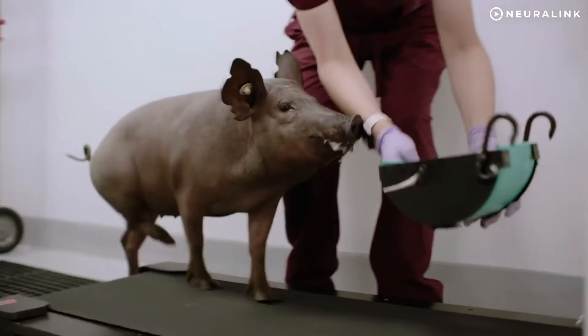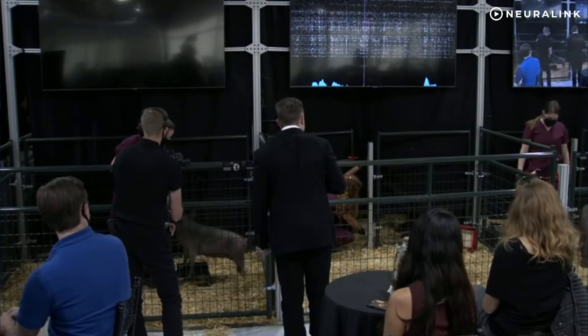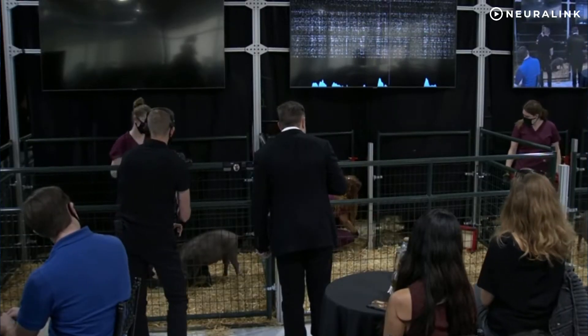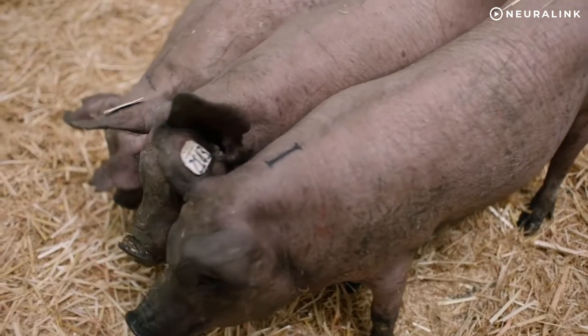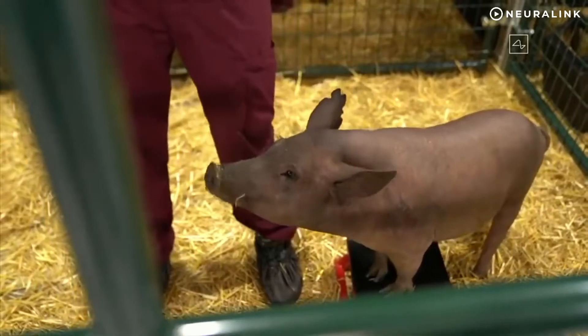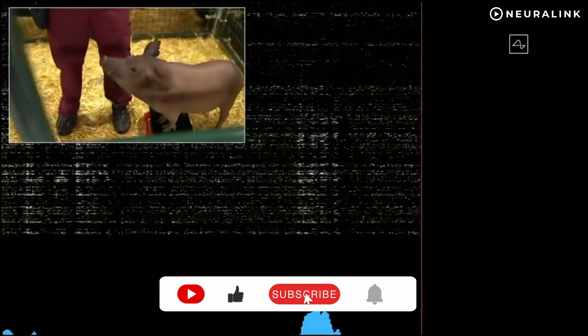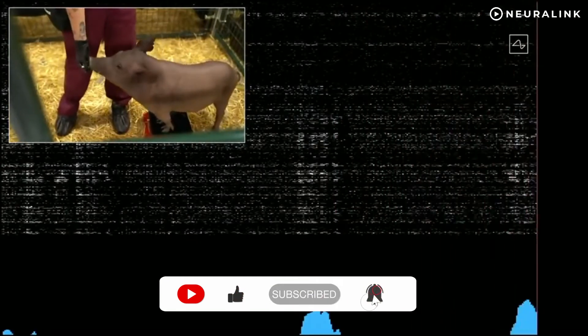Neuralink unveiled a pig called Gertrude with a thin gold computer chip in her brain to demonstrate his plans to create a working brain-to-machine interface. Gertrude was one of the three company's pigs that took part in the research video. She took a while getting going with the experiment, but when she ate and sniffed straw, the activity in her brain showed up on a graph, tracking her neural activity. She then mostly ignored all the attention around her.